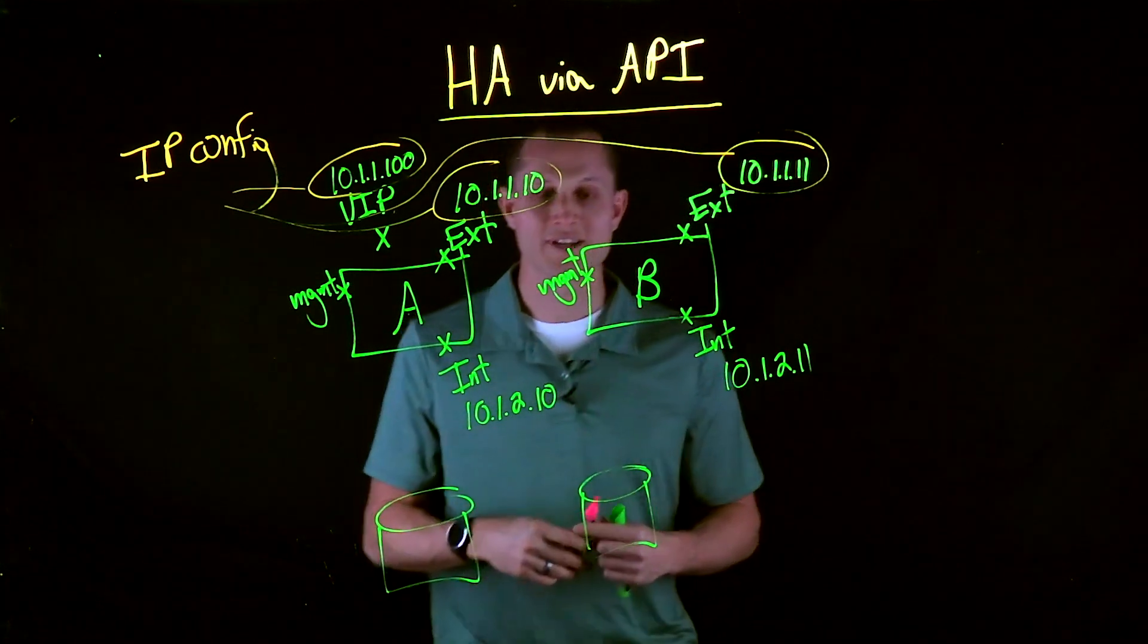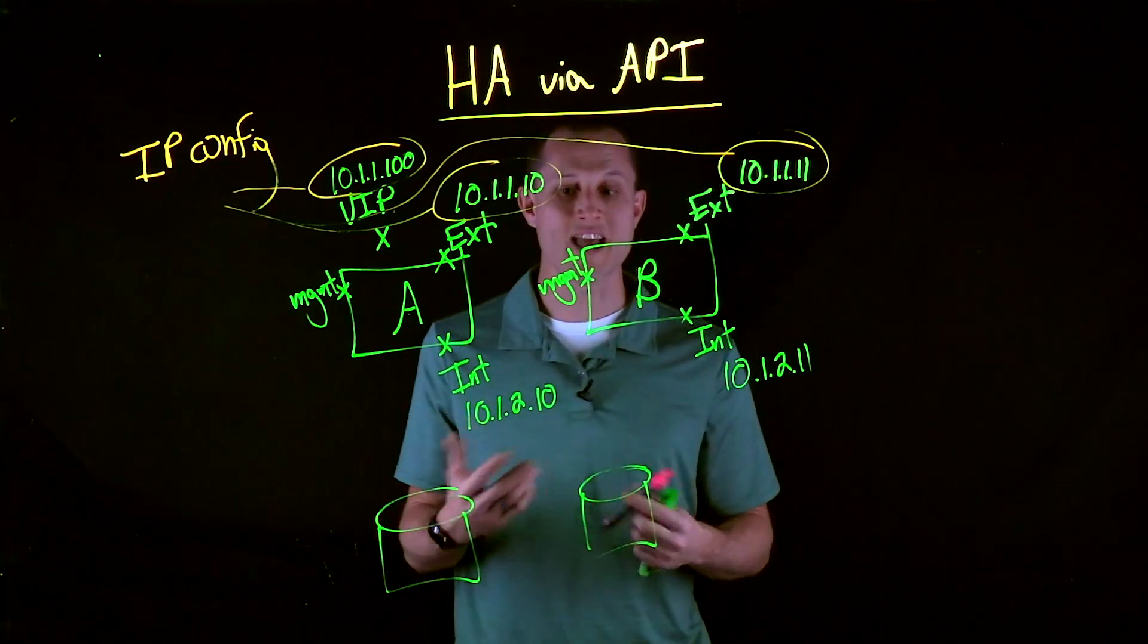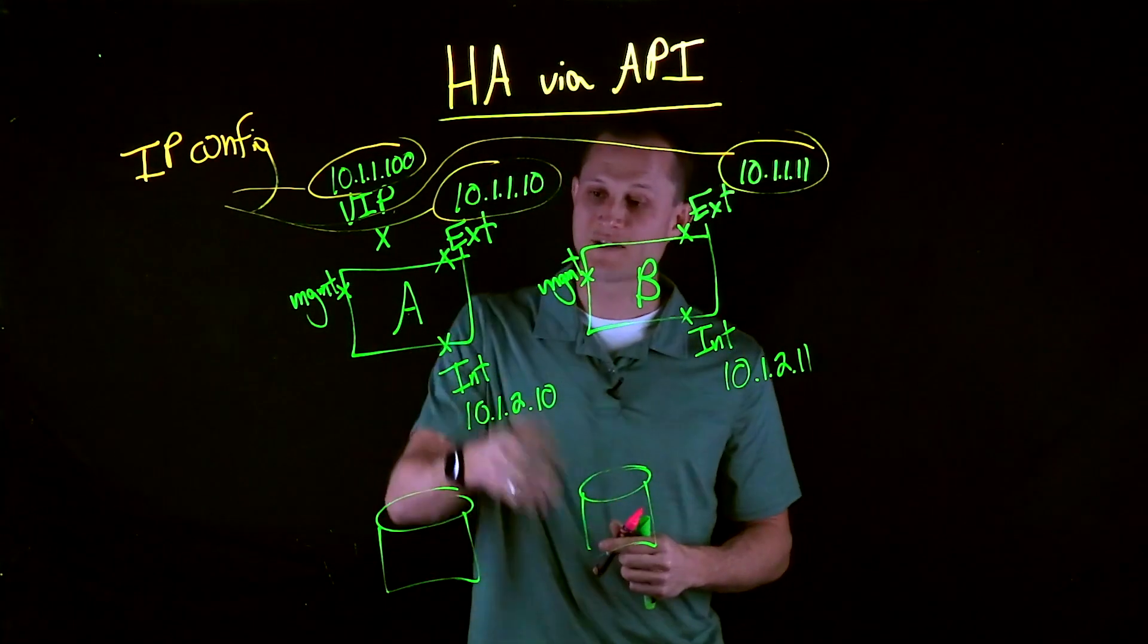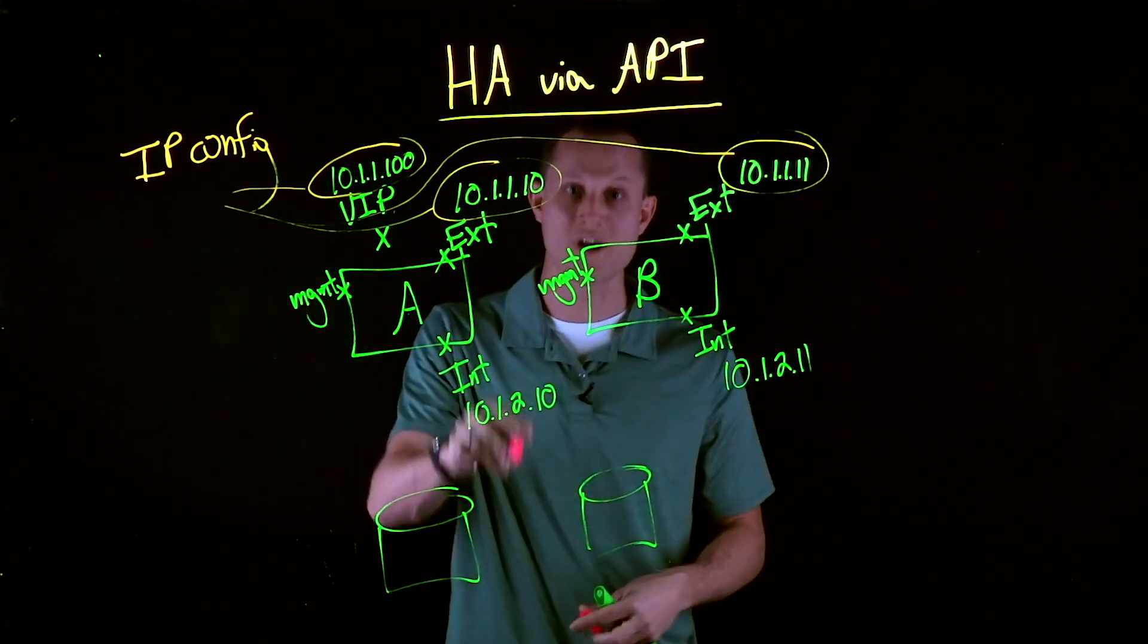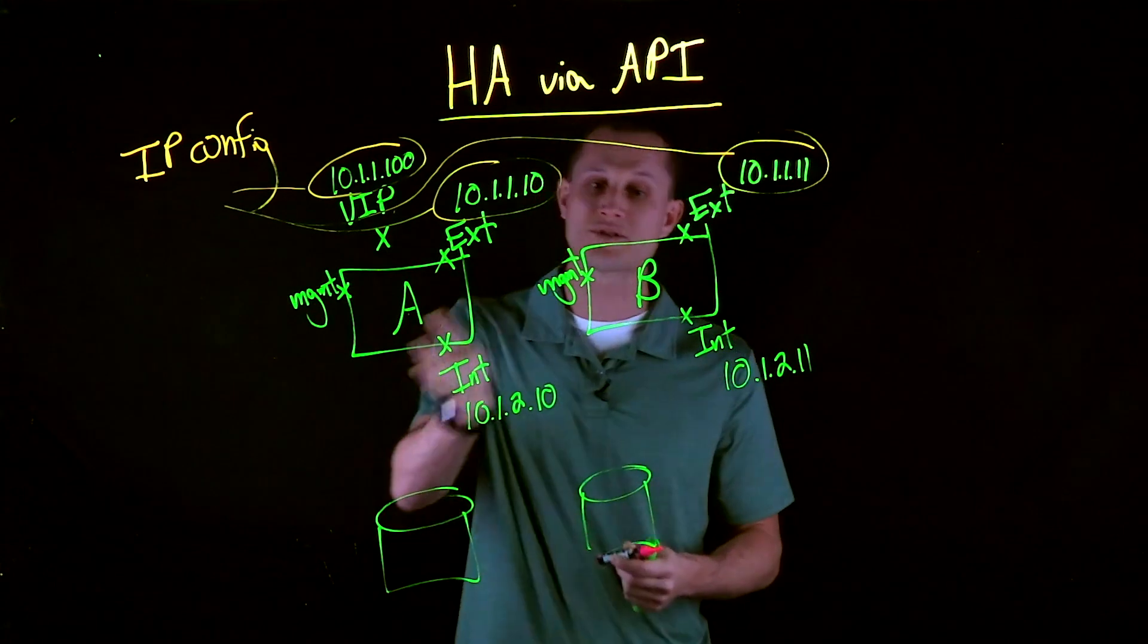The other things that we should be concerned about are SNATs and SNAT pools, for example. For an active unit, you might have a SNAT pool within this 10.1.2 range. A .12, .13, .14. And those can also float over.